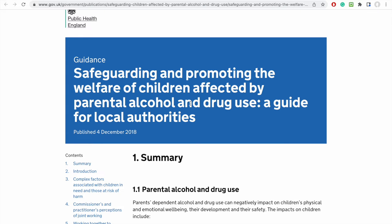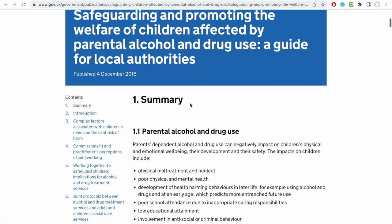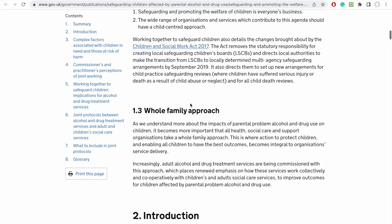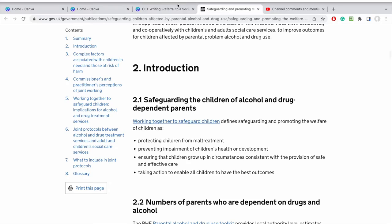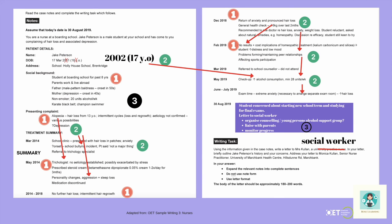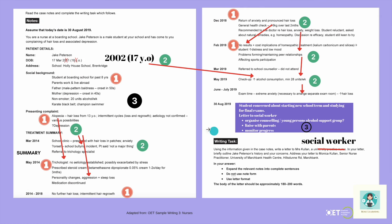Because you're referring to a social worker, there is obviously a safeguarding issue at stake here. I've put the URL in the comments box and info box below so you can check that out later. As we said, there are three things to do: the history, your concerns, and then the requests.